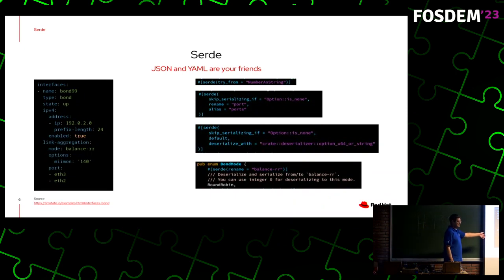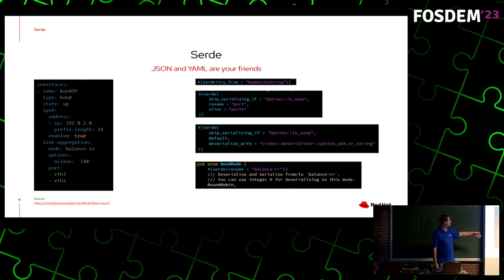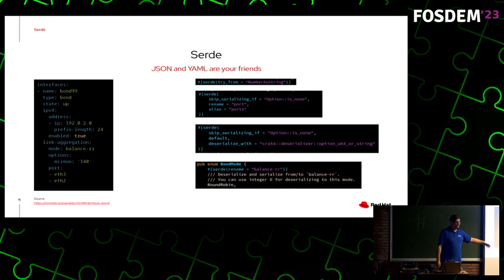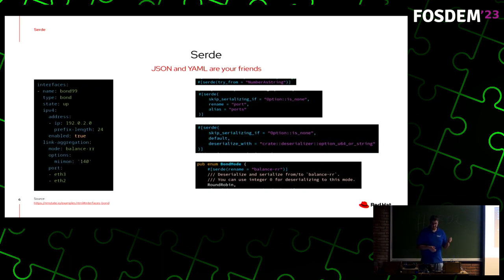Here is an example — an interface state for a kernel bond. We define that it is up, it has an IPv4 address with a specific address and prefix length, and it is enabled. Then we define the link aggregation options: the mode options and the ports. One really good thing we have is partial editing — you can define what you want to change, and we are going to merge it with what you already have configured on the system. With the Serde decorators, we were able to accept numbers as a string, accept strings, accept only a number, custom strings, create aliases, and renaming.